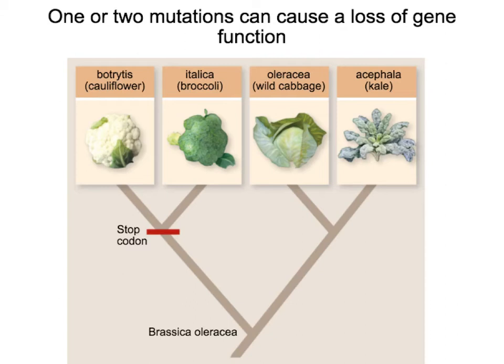Another way developmental genes can influence morphology is through the loss of a gene. In the cabbage family, a mutation occurred in the ancestor of cauliflower and broccoli that caused a stop codon in the gene regulating the length of stem growth. As a result, cauliflowers and broccoli have very tightly packed flowers produced in the same area — they keep making flowers in a very short distance from each other. This is an example of how a small mutation — just a stop codon — can result in a big change in morphology.